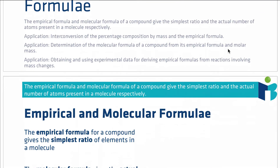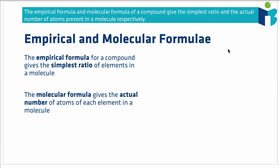Firstly, to define these two terms: the empirical formula for a compound gives the simplest ratio of elements in that molecule. An example of a possible empirical formula could be CH₂O. The reason this is a perfectly good empirical formula is because the ratio is one carbon atom to two hydrogen atoms to one oxygen atom — we can't reduce that ratio at all.